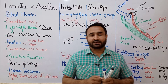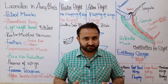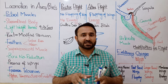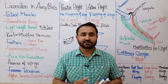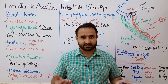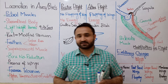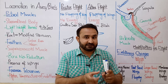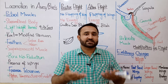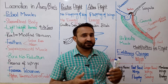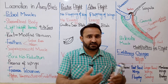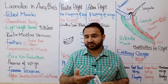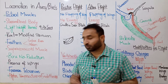उसके बाद bones number reduced है। हमारी body में 206 bones हैं जबके birds में इससे कम होती हैं — reason यह है कि birds की बहुत सारी small bones fuse होकर large bones बन जाती हैं, जिससे body weight कम हो जाता है और flight में help मिलती है। Presence of wings — इनके four limbs wings में convert होकर flight का काम करते हैं, जबके हमारे four limbs grasping का काम करते हैं। Wings के अंदर muscles में changes हैं, skeleton में changes हैं, feathers present हैं — ये energetic होते हैं और better flap कर सकते हैं।